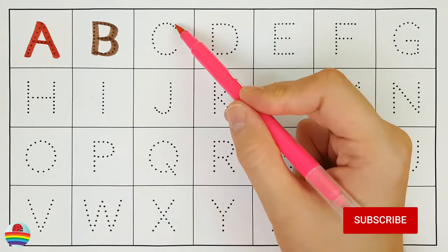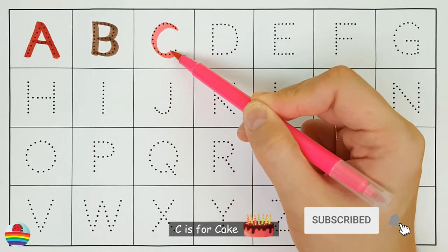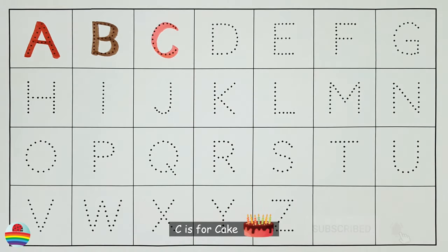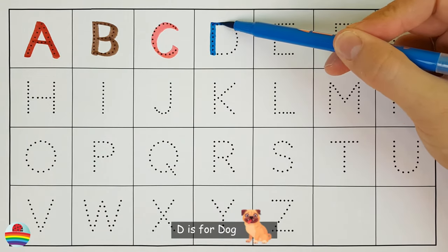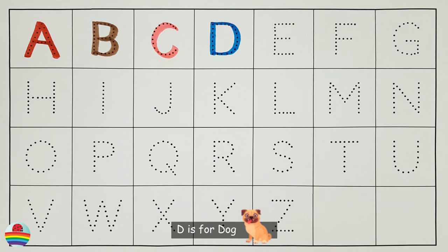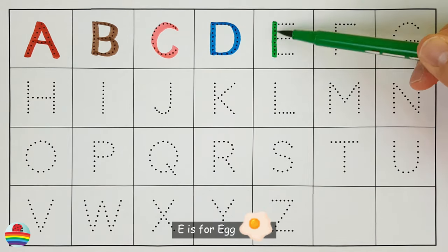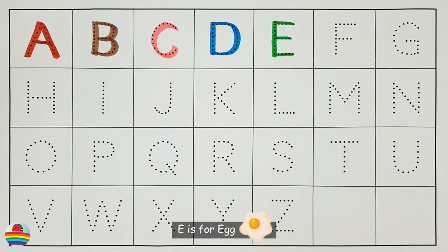C. C is for Cake. C. D. D is for Dog. D. E. E is for Egg. E.